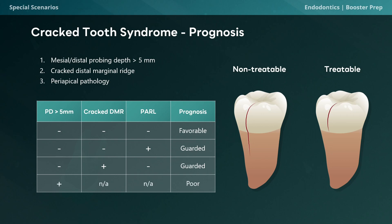Finally, we have a situation where we do have a probing depth larger than 5 millimeters. In these cases, it doesn't matter if you have a cracked distal marginal ridge or periapical radiolucency, because the prognosis is automatically poor. A large probing depth at an isolated location indicates a deep crack that has led to bacterial infiltration and subsequent bone loss. We must also remember that the extent of the crack is very important — as the crack extends deeper, we trend closer towards a non-restorable situation.